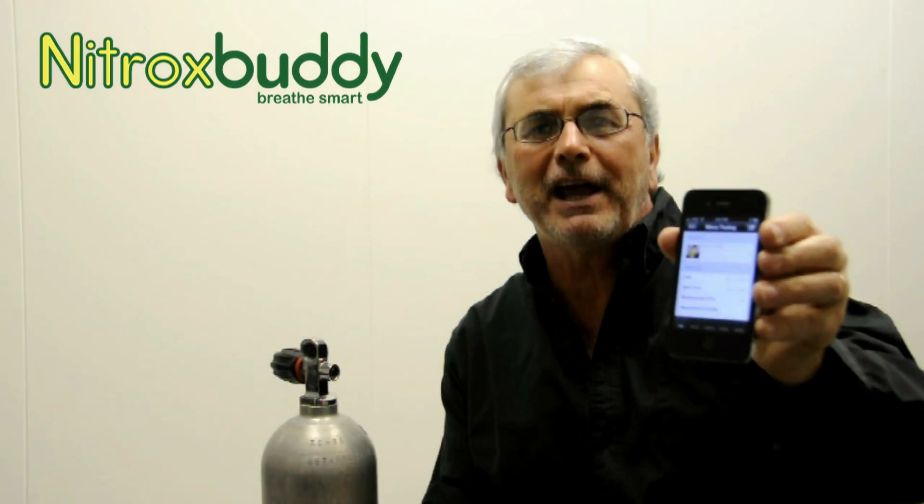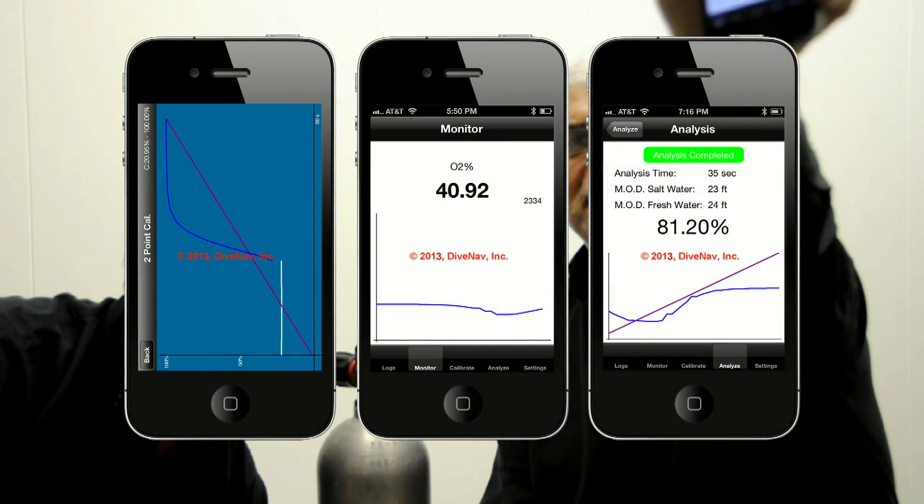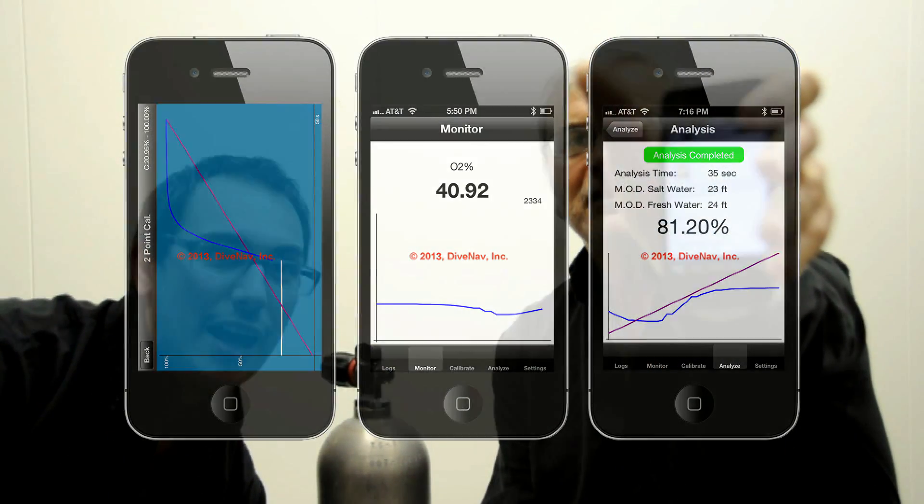Calibrating NitroxBuddy is extremely easy, and you can log and share with your friends all your analyses. NitroxBuddy uses the latest Bluetooth 4.0 low energy technology. It contains a replaceable battery and is designed to work with oxygen sensors from different manufacturers. Additionally, NitroxBuddy comes with the free app My NitroxBuddy for iPhone 4S and iPhone 5, and soon for Android smartphones too.